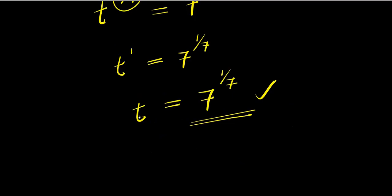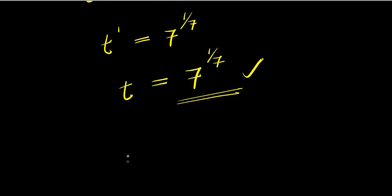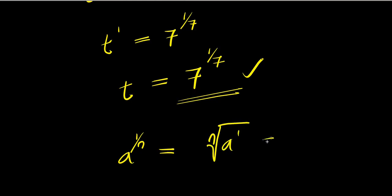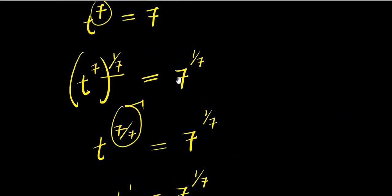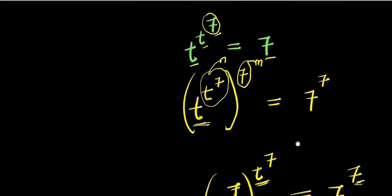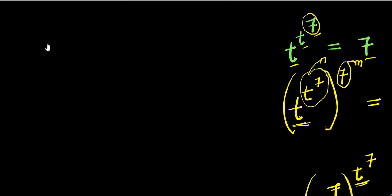This is one way of solving it. We can express this using the identity: a to the power of one over n equals the nth root of a. Applying that here, we get the seventh root of seven as our answer. Now let's also solve this using the logarithm method, starting again with t^(t^7) equals seven.